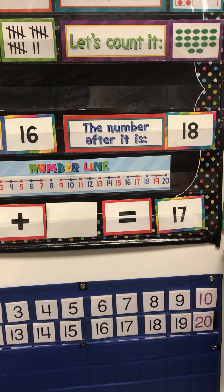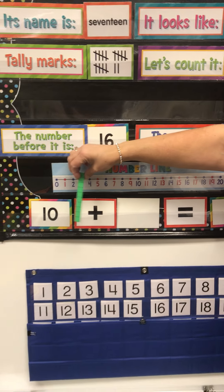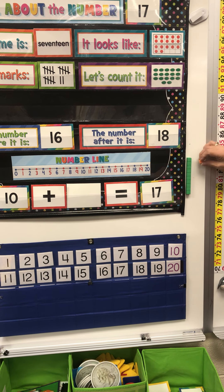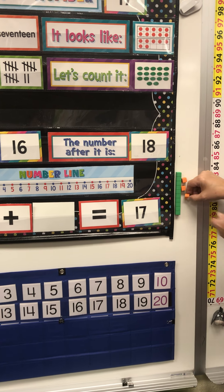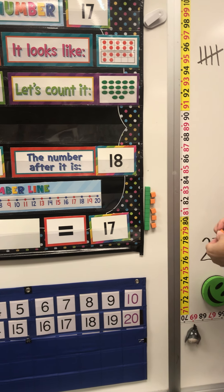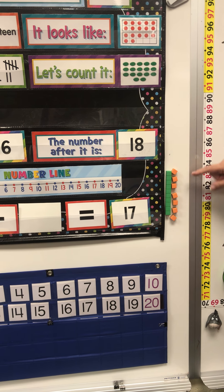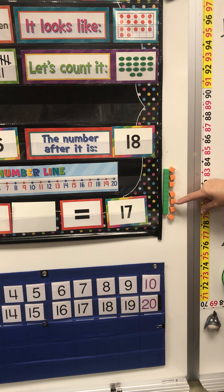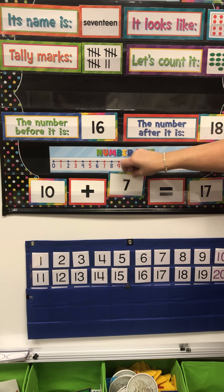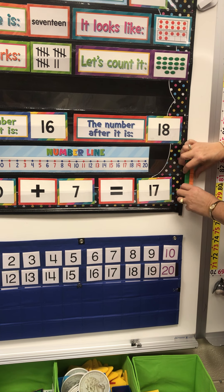Let's see how many we need to make 17. Here's 10 — remember, this long one is 10. Now let's count until we get to 17. Ten, eleven, twelve, thirteen, fourteen, fifteen, sixteen, seventeen. How many ones did we have to use? One, two, three, four, five, six, seven. So it's 10 plus seven equals 17. This whole thing makes 17 just like that.